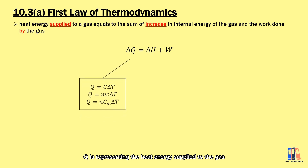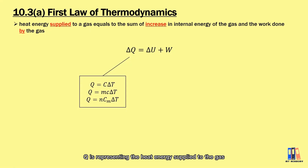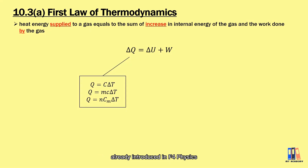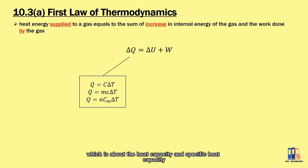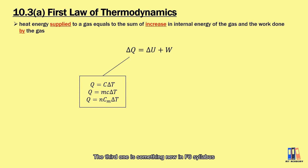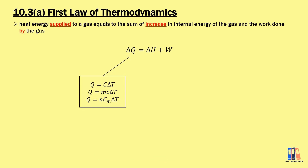Q represents the heat energy supplied to the gas. The first two formulas for Q have already been introduced in Form 4 physics, which is about the heat capacity and specific heat capacity. The third one is something new in the Form 6 syllabus, which is molar heat capacity.